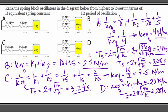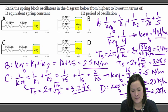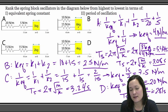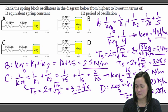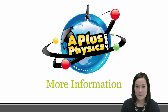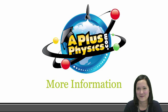So to answer our question, ranking the spring block oscillators from highest to lowest: for spring constant, it is B as the greatest, followed by D, C, and A. For period of oscillation, we have A as the greatest, followed by C, B, and D. For more information on springs, you can go to aplusphysics.com. Thanks.